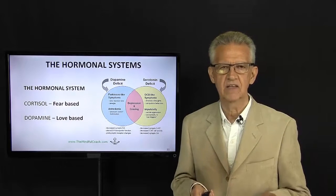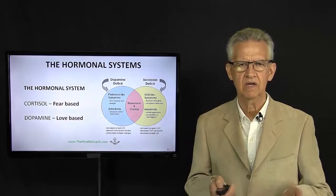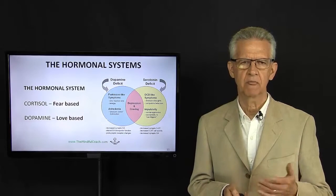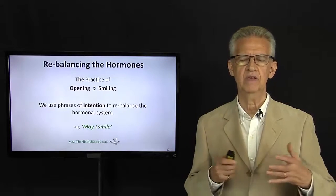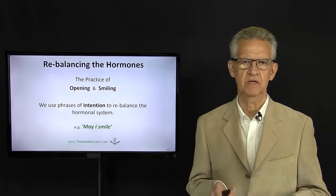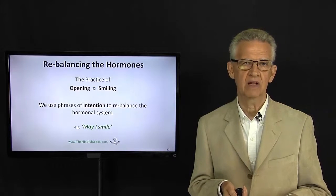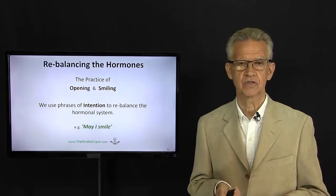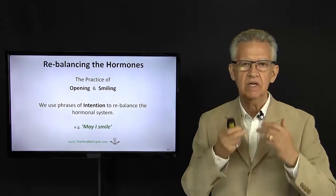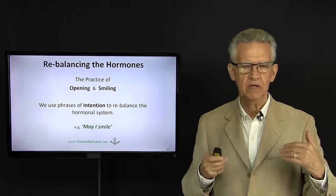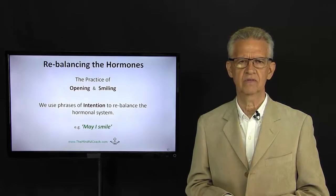The dopamine is that love-based, that's that sense of, yeah, okay, this is okay, I can manage this. Yeah, I feel good about this, I'm sure I can do this. So we rebalance the hormonal system again by opening, just physically feeling our bodies being more open, and we use phrases of intention to rebalance that. One of the ways that we can rebalance the hormonal system is just to smile. The science tells us that when the corners of the mouth are up, that causes the dopamine to come into the body, which gives us that sense of confidence, that everything's okay.